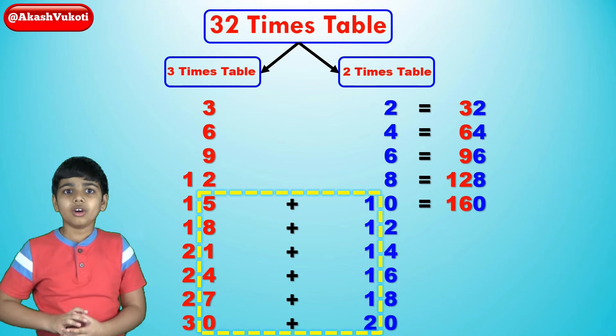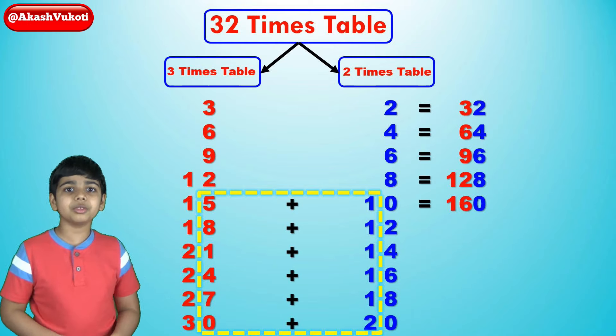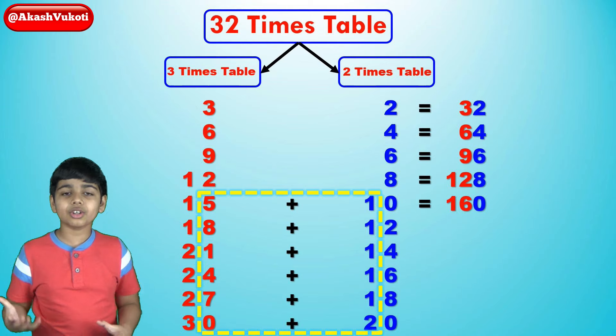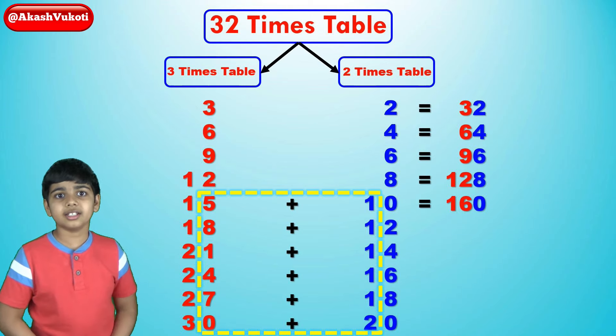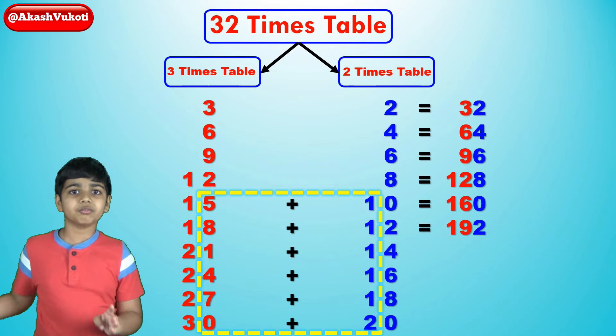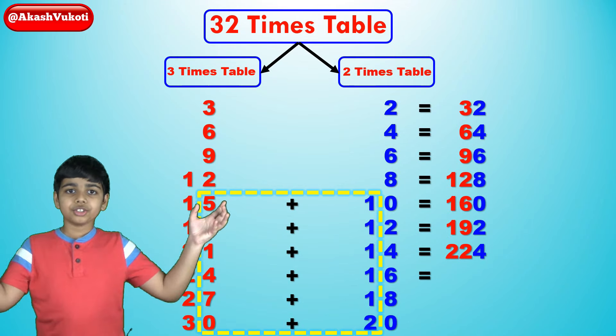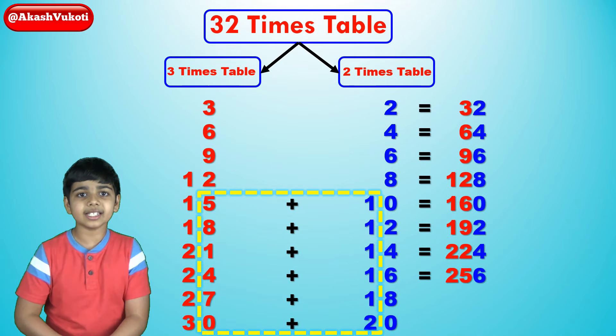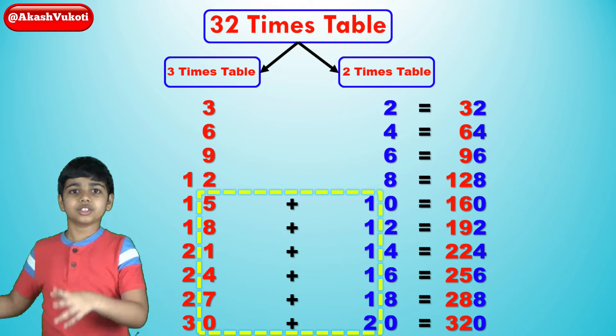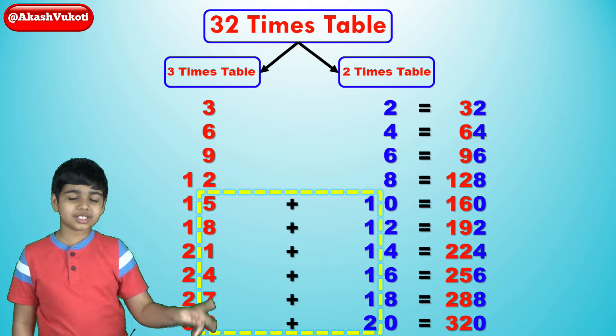Next we get 32 times 6, that would be 18 and 12. So we take the 1 from 12 and add it all the way, add the 1 to the 8 in 18 to get the 19 in 192. Then 32 times 7 is 21, 14, 224. And then 32 times 8 is 24, 16, 256. 32 times 9 is 27, 18, 288. Finally, 32 times 10 is 30, 20 becomes 320. Right here, that is the 32 times table.